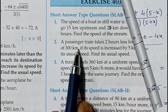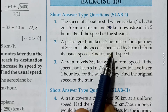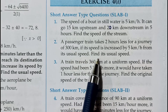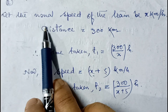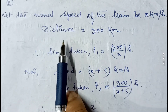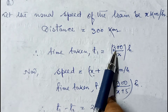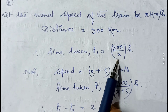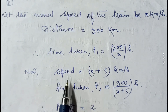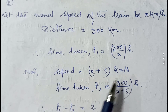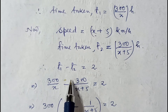Question number 2: A passenger train takes two hours less for a journey of 300 kilometer if its speed is increased by 5 kilometer per hour from its usual speed. Find its usual speed. Let the usual speed of the train be x kilometer per hour. Distance is 300 kilometer, so time taken t1 is 300/x hours. If speed is increased by 5, new speed is x plus 5, and time taken t2 is 300/(x plus 5) hours.